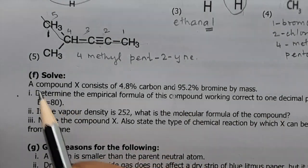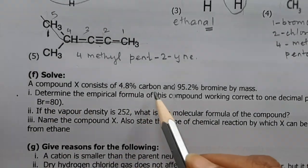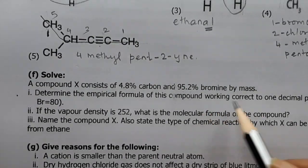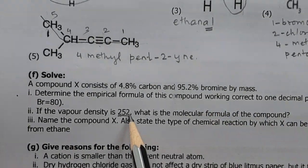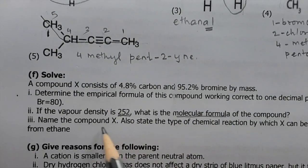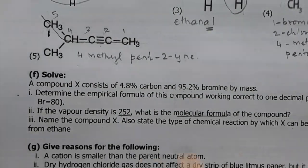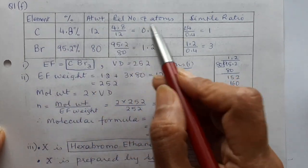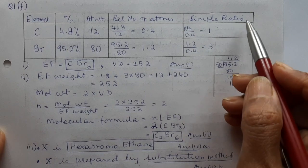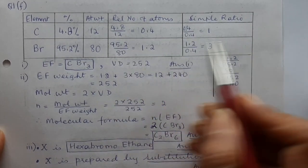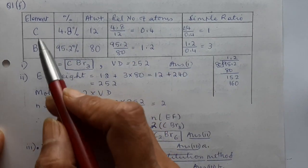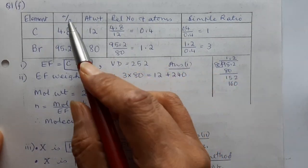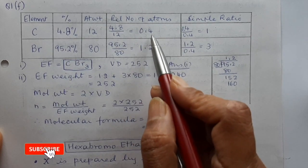Question 1f: Empirical formula question. Compound X contains 4.8% carbon and 95.2% bromine by mass; vapour density is 252. Set up a table with columns: element, percentage, atomic weight, relative number of atoms (percentage ÷ atomic weight), and simplest ratio. For carbon: 4.8 ÷ 12 = 0.4. For bromine: 95.2 ÷ 80 = 1.2.